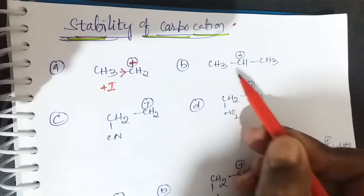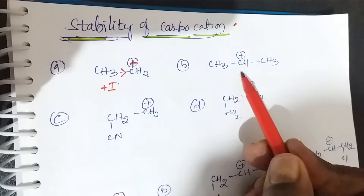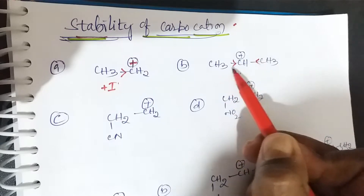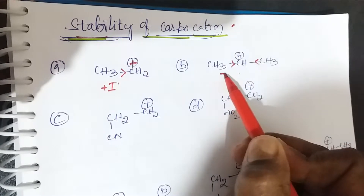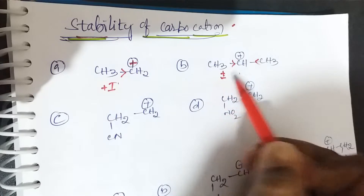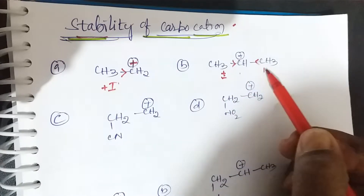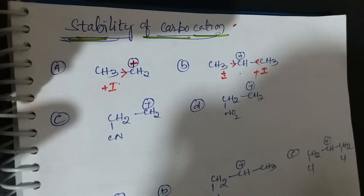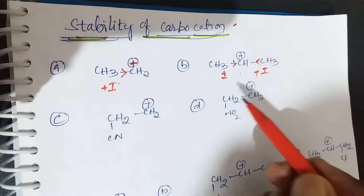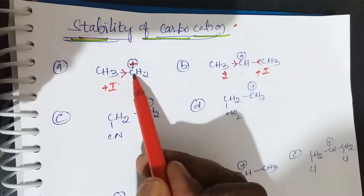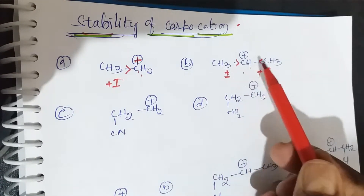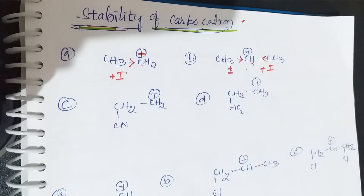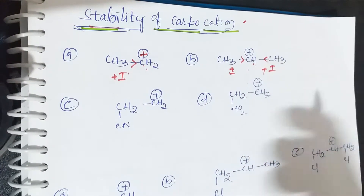The first one is the primary carbocation and the second one is the secondary carbocation. In the secondary carbocation, two plus I groups (CH3) are present — both are electron releasing groups. Therefore, secondary carbocation is more stable than primary carbocation.